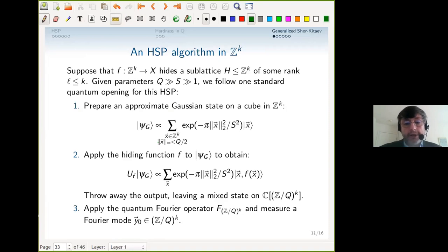Then the third step: apply the quantum Fourier operator F_{Z mod Q}^k and measure. Shor-Kitaev has a version of all this already. When I say standard, this part has been done before, except the Gaussian shaping is an alternate choice. The idea is that the Fourier operator on Z mod Q^k is meant to be a stand-in for Fourier on Z^k itself.